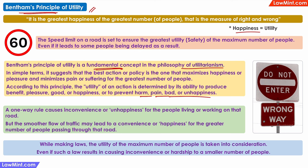Since it is practically impossible to make everybody happy all the time, the actions or policies may lead to some inconvenience, pain, suffering, or unhappiness to a smaller number of people. For example, the speed limit on a road may be fixed at 60 km per hour. You may have a car capable of comfortably cruising at 100 km per hour, and you may be a very good driver, and you may believe that your time is getting wasted because you are being forced to travel at a slower speed. But the reason for the speed limit is to ensure the safety and therefore create utility for the maximum number of people, so a lesser number of people may be inconvenienced due to the lower speed.